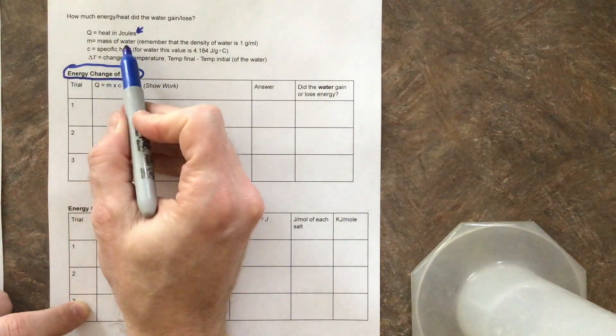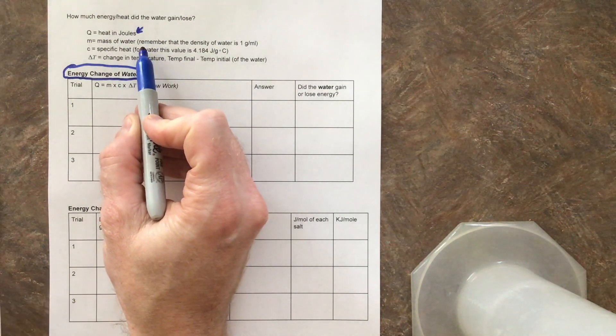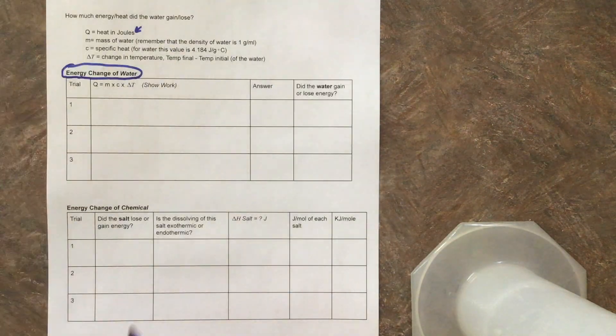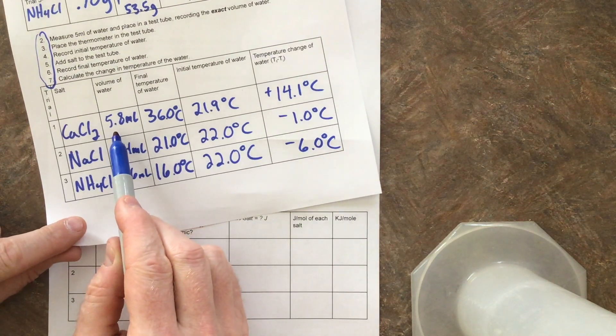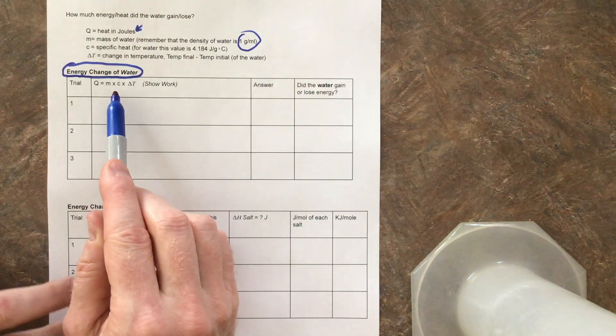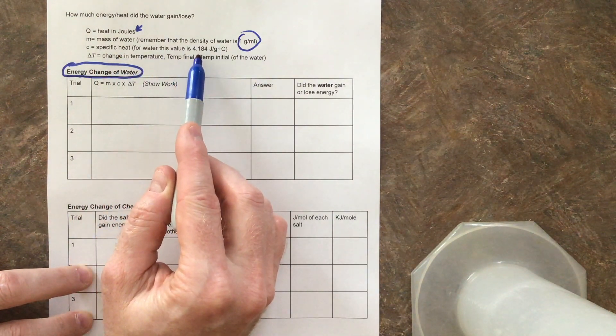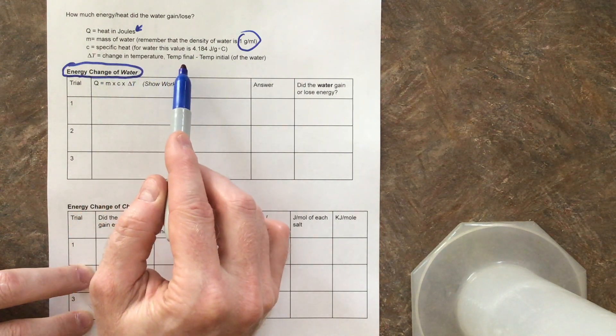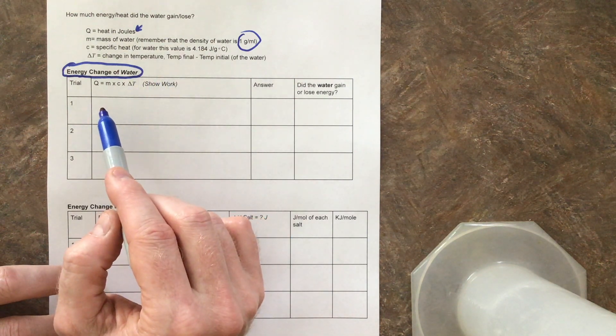The M, that stands for the mass of the water. Now you're like, wait, we never figured out how much the water weighed. You're right. But we did figure out the volume of water. And we can remember from the beginning of chemistry that the density of water is one gram per milliliter. So in these situations, if the volume is 5.8, then guess what? The mass is 5.8. C, what's C? C is the specific heat. For water, this value is 4.184. We've talked about that in the past. ΔT, that's the change in temperature for the water. So at this stage, I'd like you to pause the video and see if you can fill in the values for each one of the trials. I'll do it now as well.